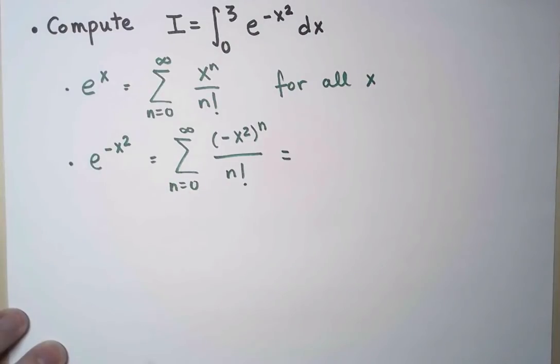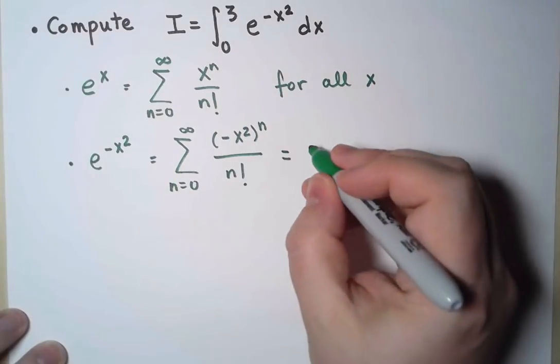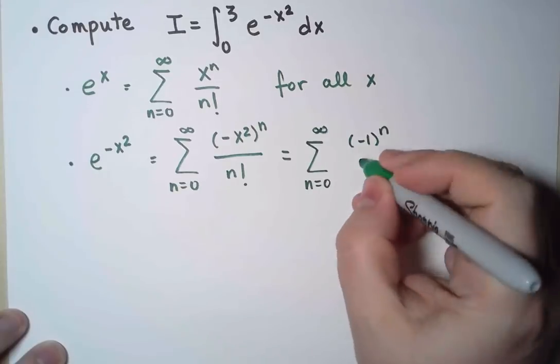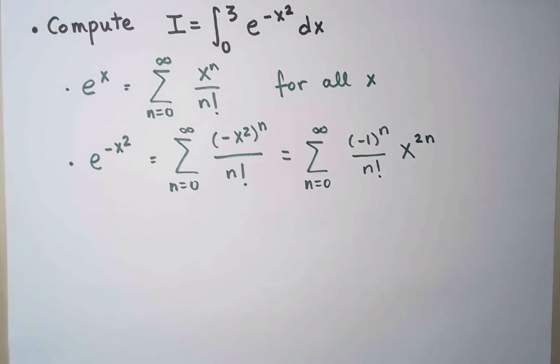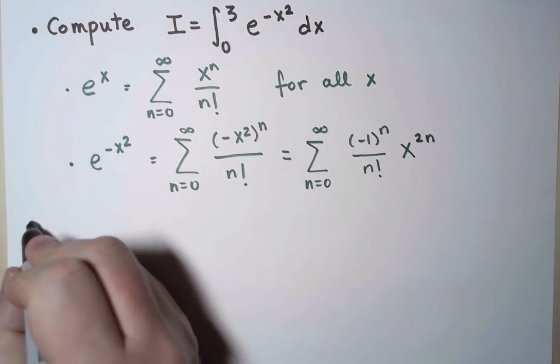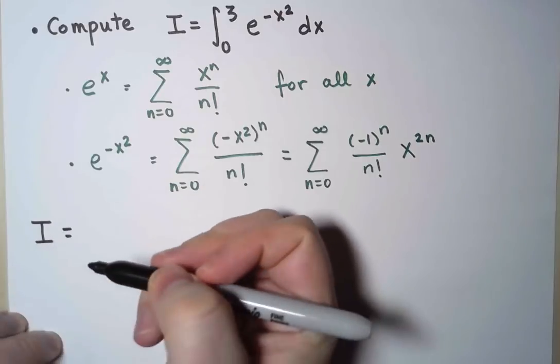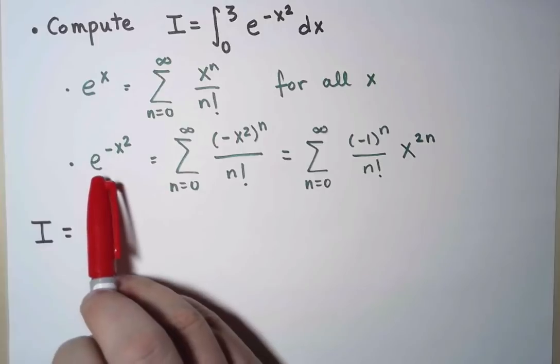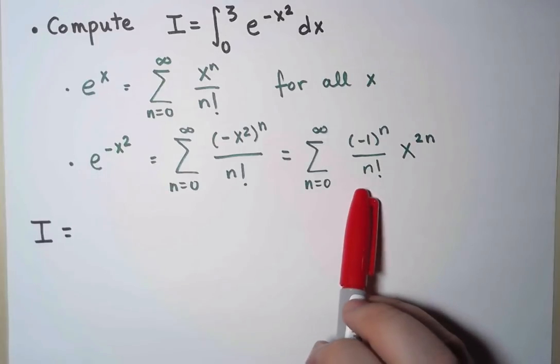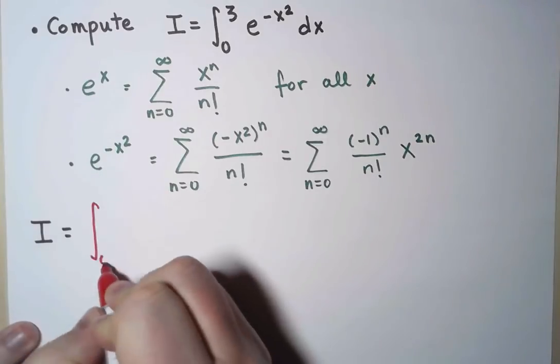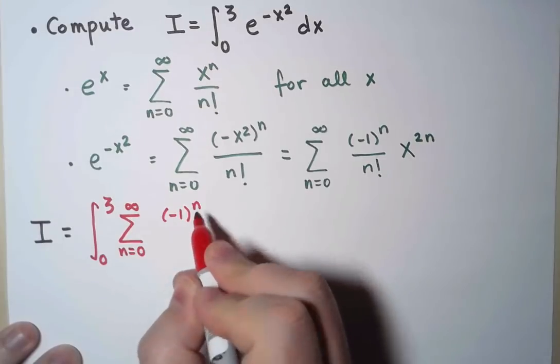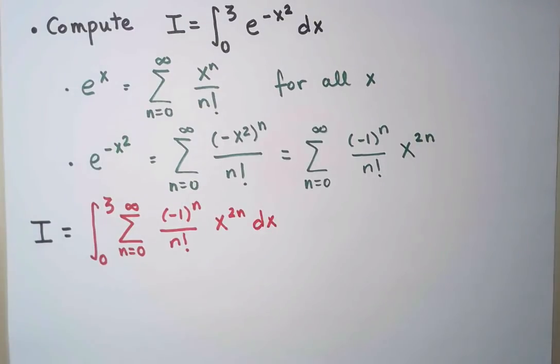And let's separate the numerical coefficients, so it really looks like a power series. There. So now I go back to my original calculation, the integral I'm trying to compute. And what I'm going to do is, instead of integrating the function looking like this, I'm going to integrate the function looking like this.